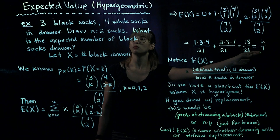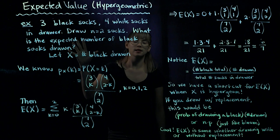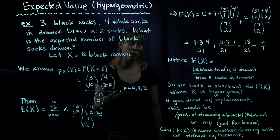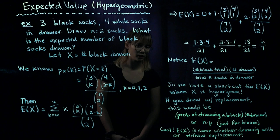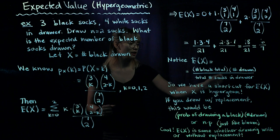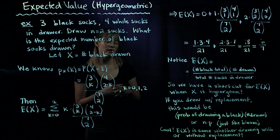One cool thing to notice: six sevenths equals the number of socks drawn times the number of black socks in the drawer divided by the total number of socks in the drawer. We have a shortcut formula for the expected value of X when X is hypergeometric — we can just take that ratio and multiply it by the number drawn.